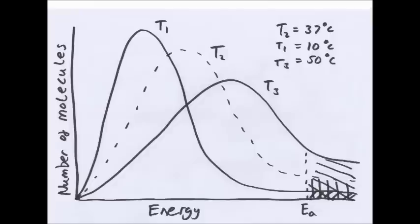And as you can see, T1 has less area under the curve after Ea than T2. If there is more area under the curve, more molecules, more molecules with enough activation energy to react, rate of reaction increases.